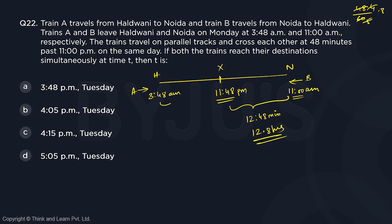Similarly, what is the time taken by Train A to reach point X? It departed at 3:48 a.m. and arrived at 11:48 p.m. From 3 a.m. to 23:48 is 20 hours. So the time taken by Train A from H to X is exactly 20 hours.